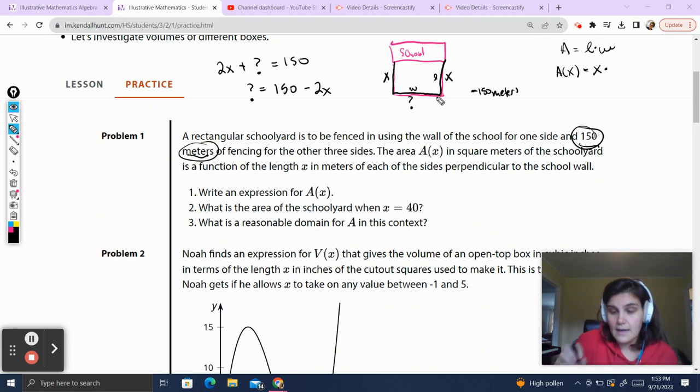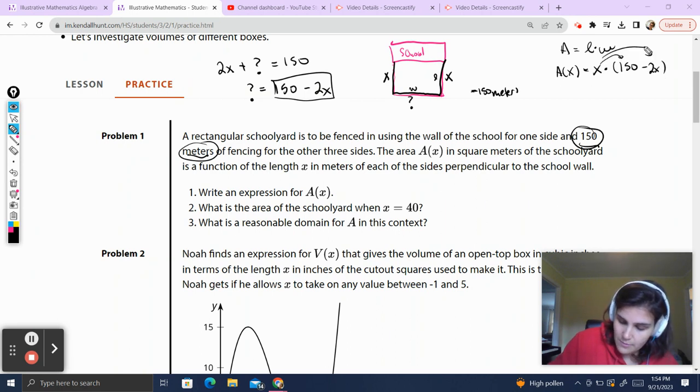This has to be 150 meters of fencing, which means 2x, because we're going to have this wall and this wall, plus my question mark is going to equal 150, which means I can redefine my question mark as 150 minus 2x, because it's going to be whatever we use for those two sides. We're going to subtract that from the 150 of fencing that we used, and that's going to get us what our width is. So when I'm writing my function, I'm going to multiply out: 150x minus 2x squared. And we wrote our expression for A(x).